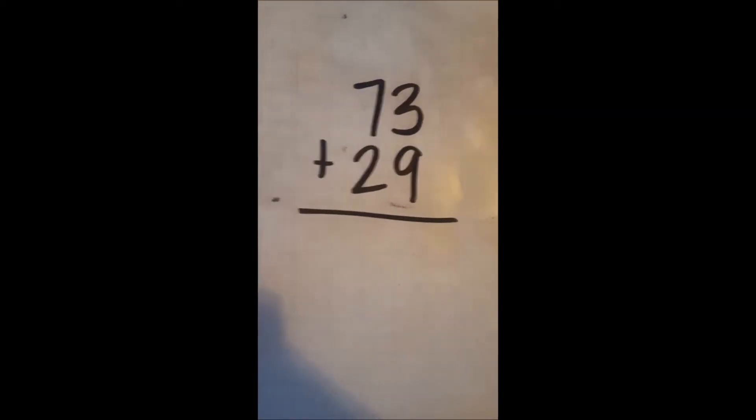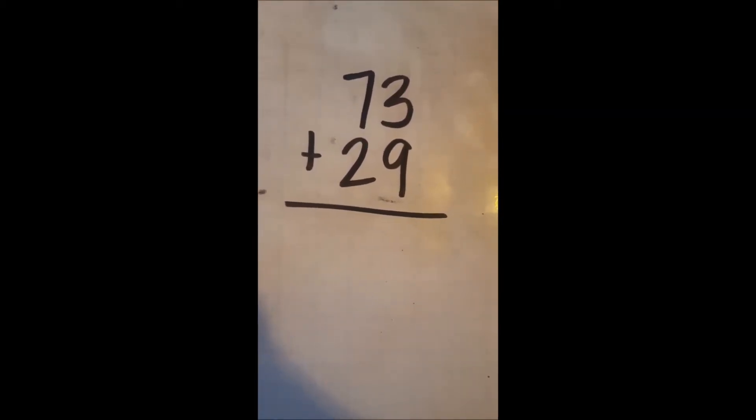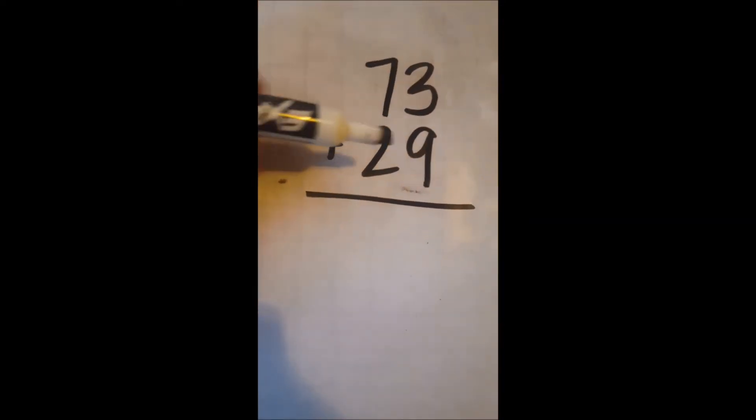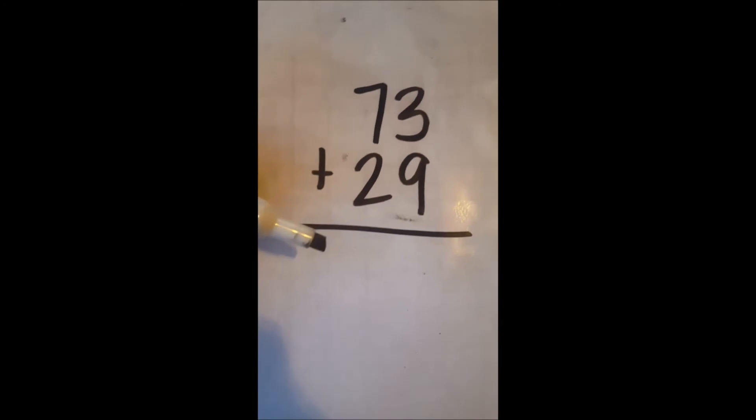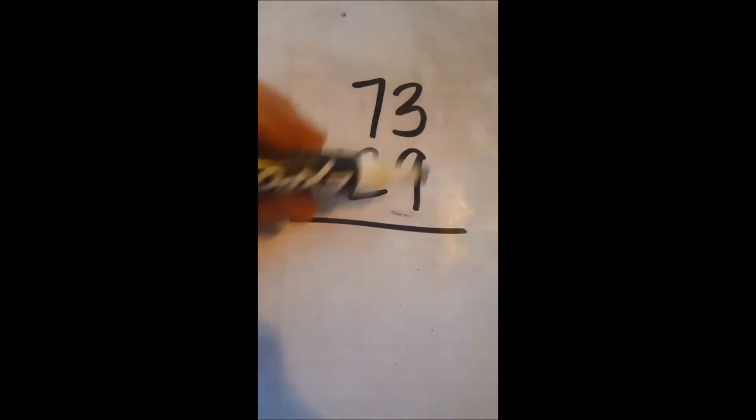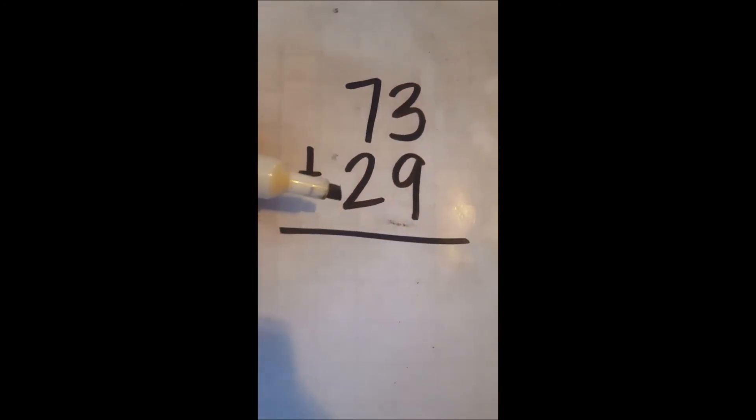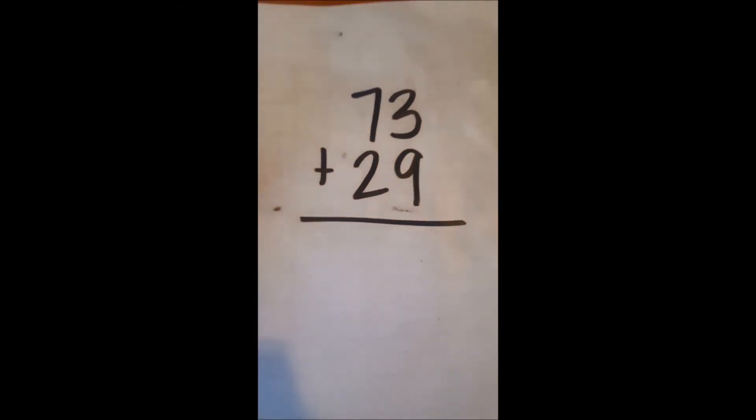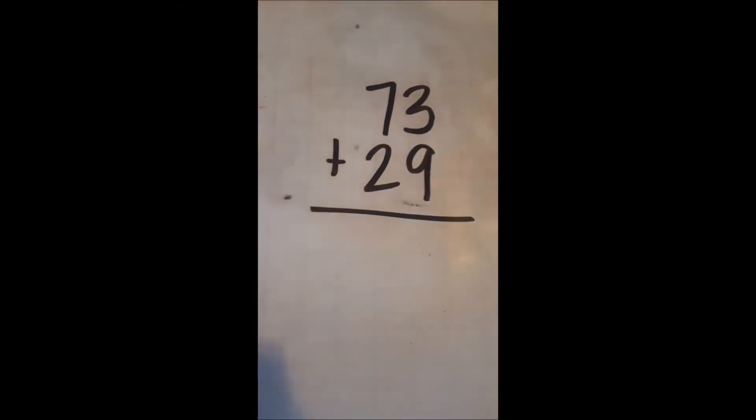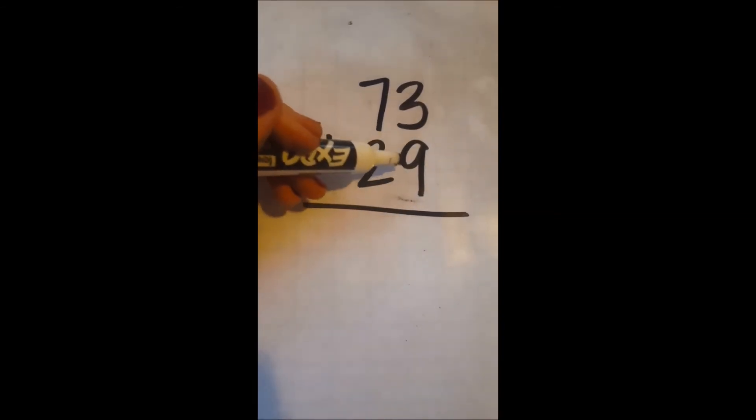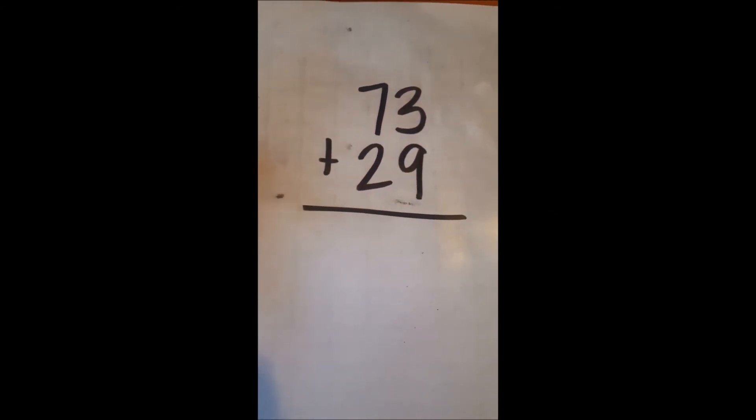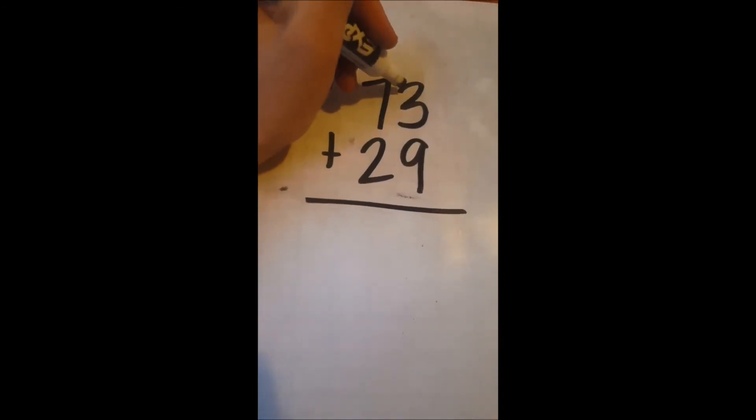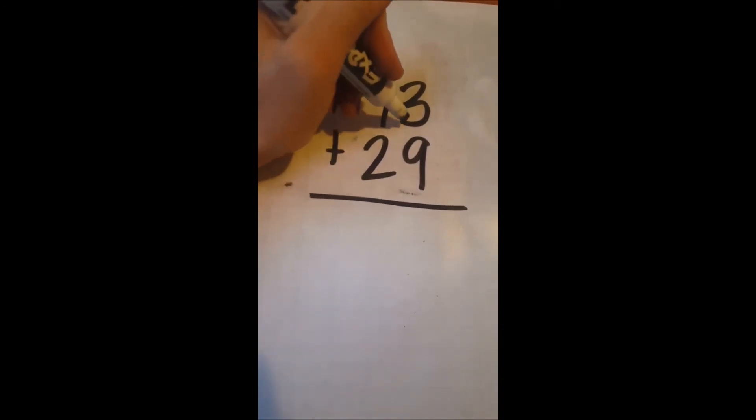When students get older and haven't learned to count on, we often see a problem when they get to something like three plus nine. Students trying to count all would use their fingers, but they won't have enough. A great way to count on is to put nine in your head and count on from there: 10, 11, 12.